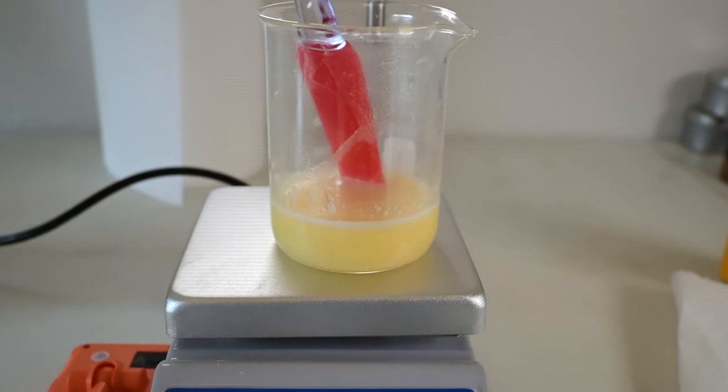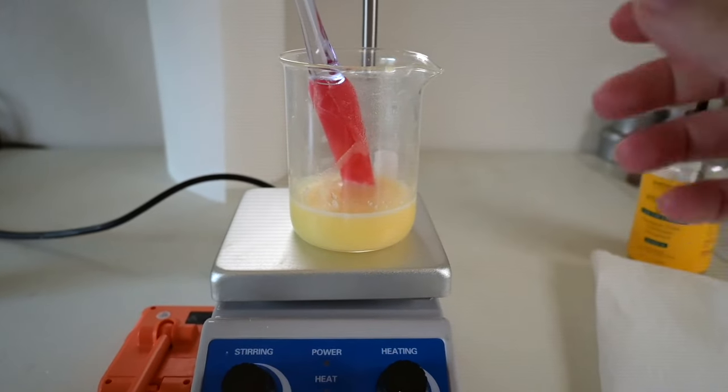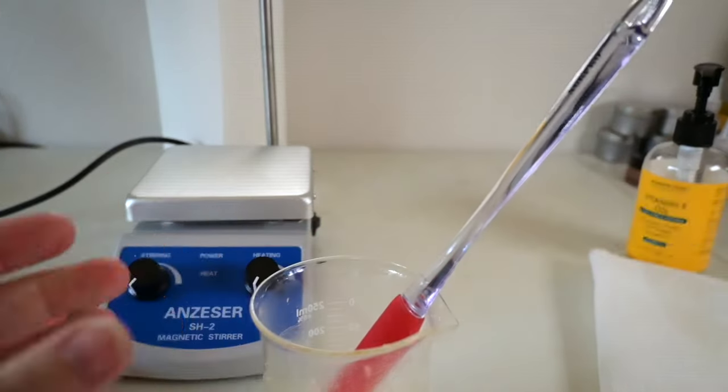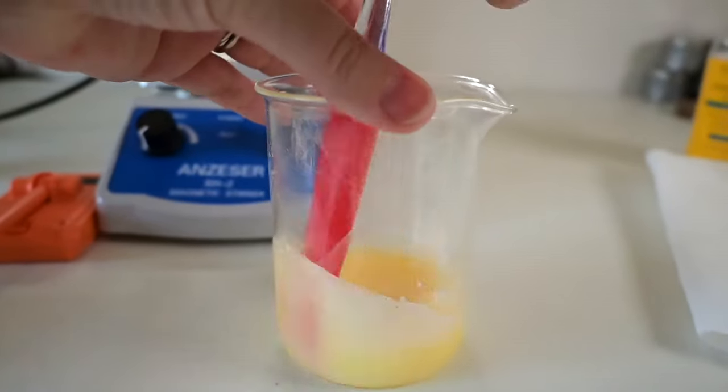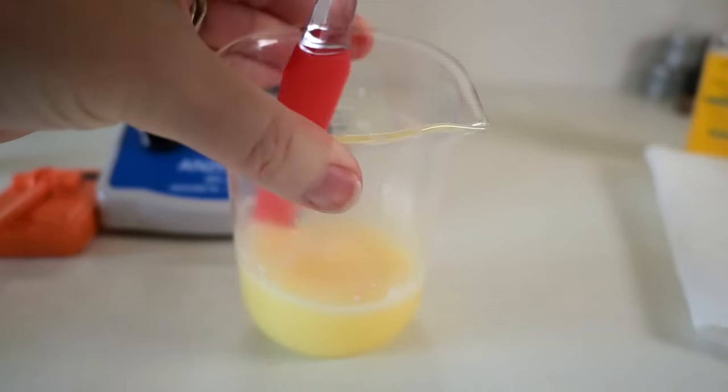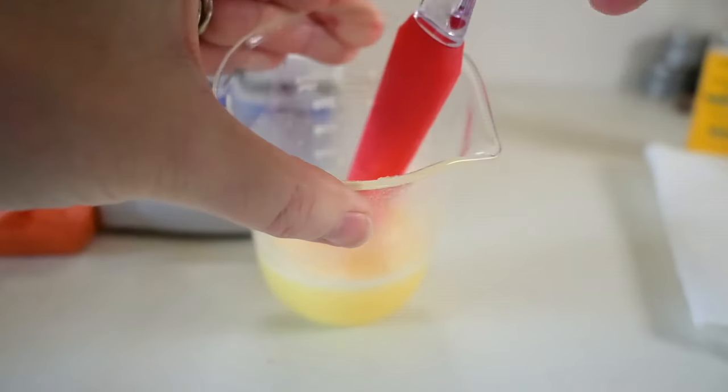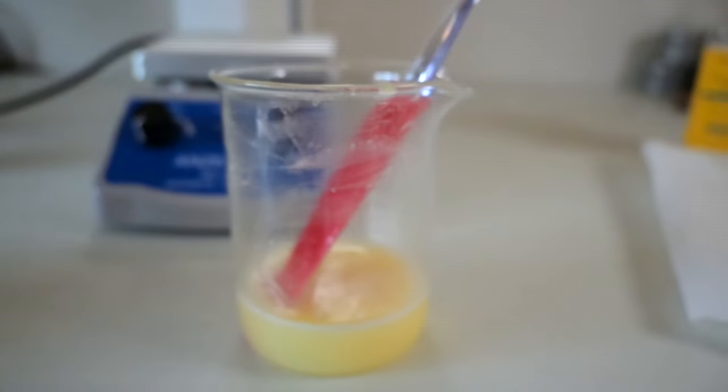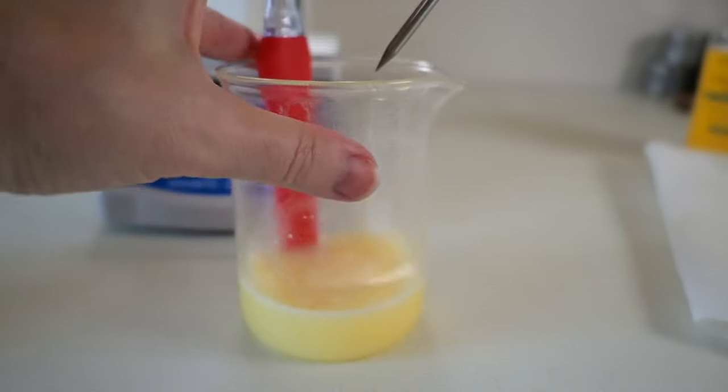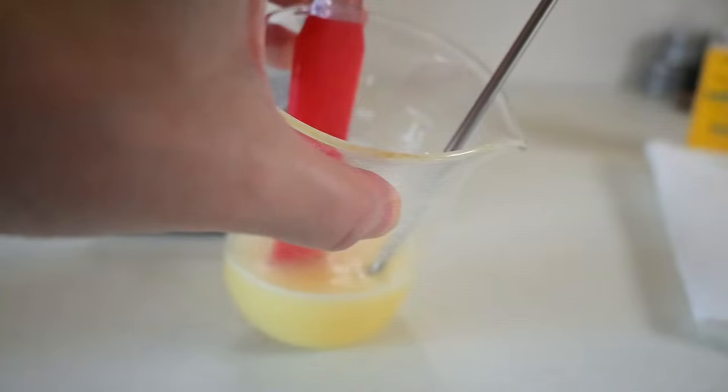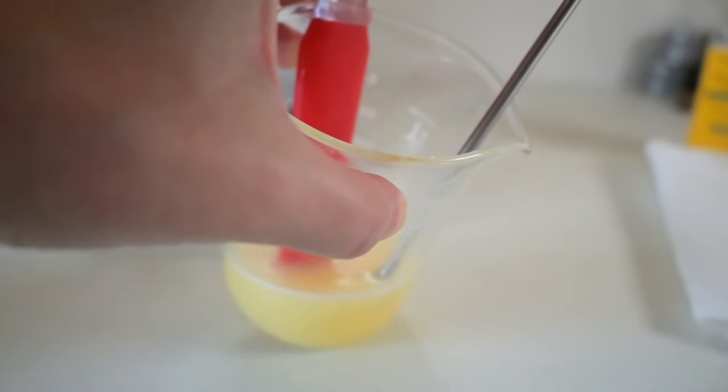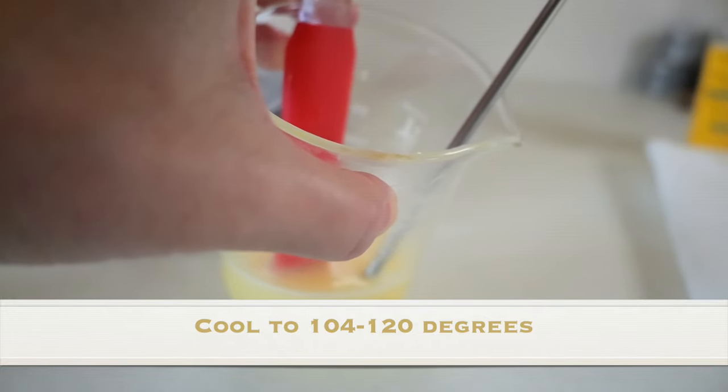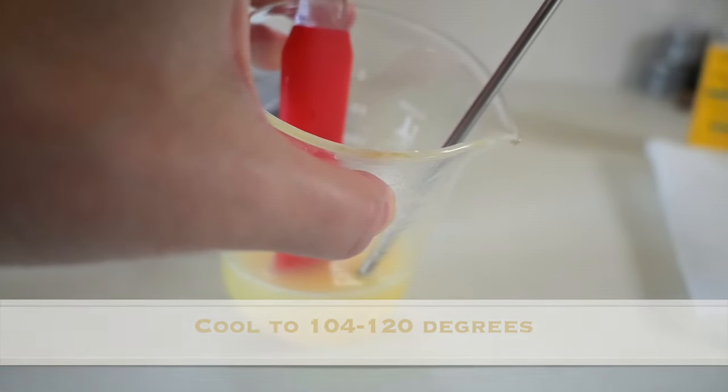All right, this looks like it has melted all of the wax. It kind of looks like melted butter. Yep, just making sure there isn't anything else in there. I'm going to take a quick temperature gauge just to see how hot it is. Basically, we want this to cool down to 122, 120. Anything below 122 but above 104.